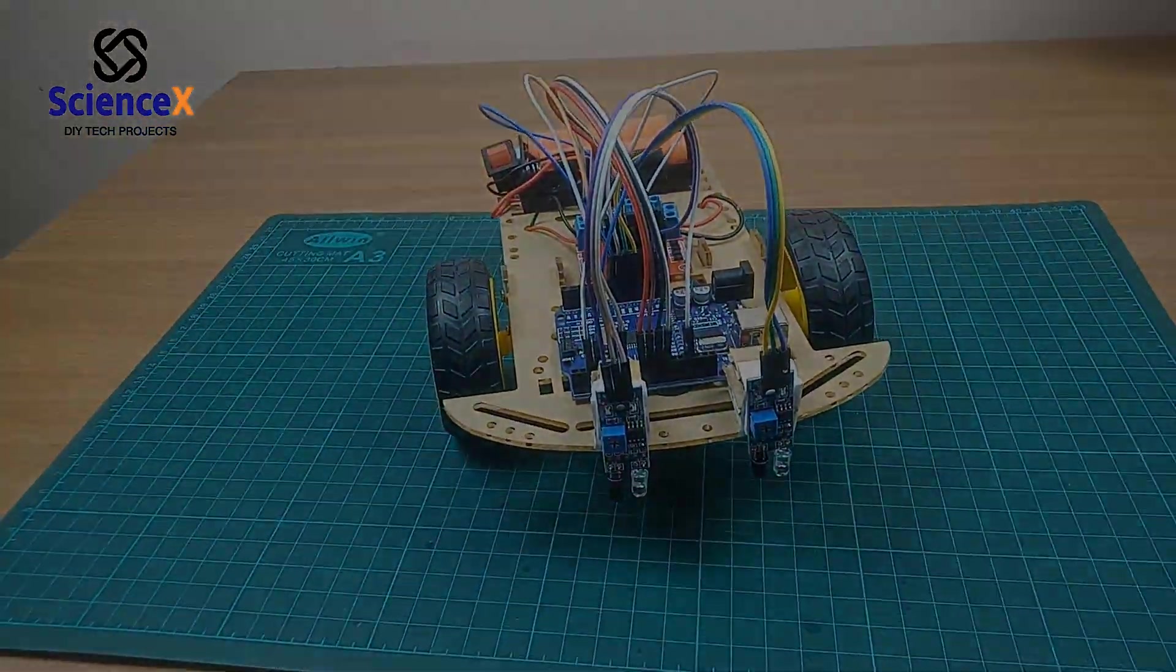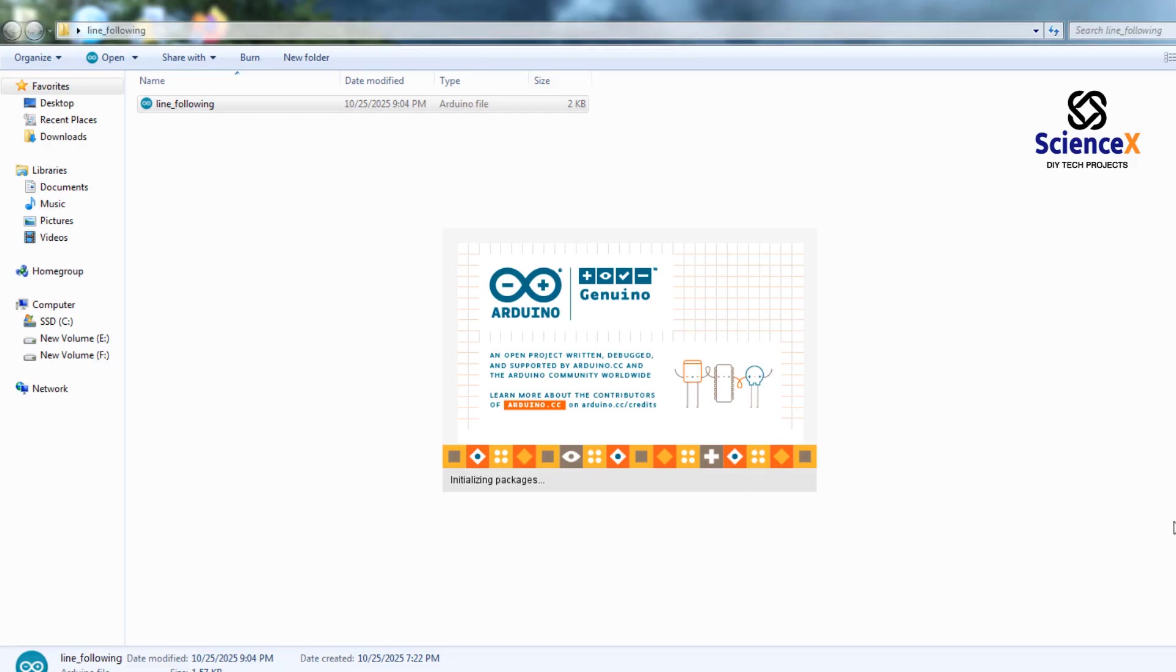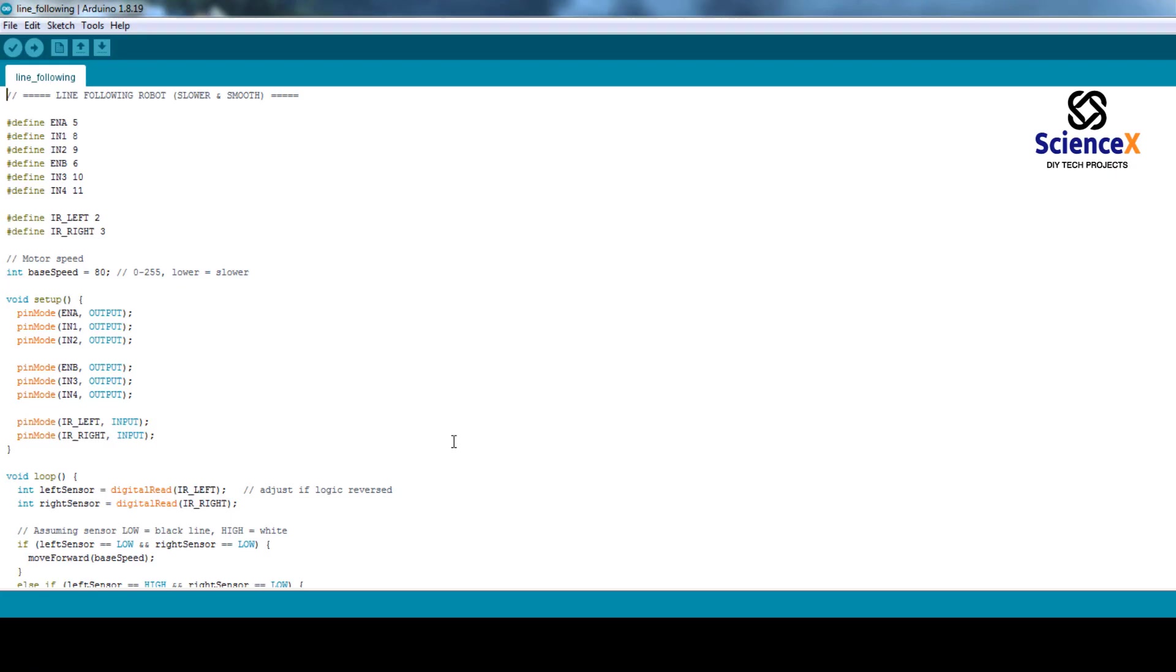We have to program the Arduino board. For that we need IDE. IDE is taken from the Arduino website. And then I wrote this bunch of lines for this line following robot. See here, first I define the pin configurations. Enable A, enable B, and input 1, input 2, input 3, input 4. All pins are defined as per the pin diagram. We should not change the pin numbers here. So we have to make sure about that.